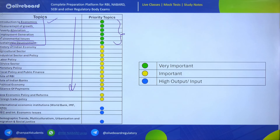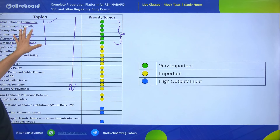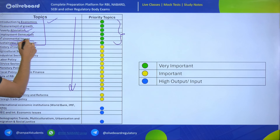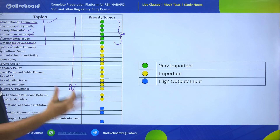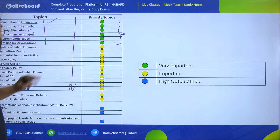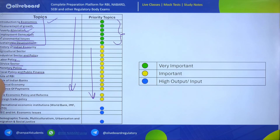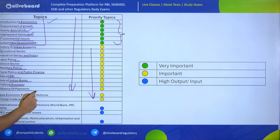The blue color topics include: international economic institutions, international economic issues, and social issues such as demographic trends, multiculturalism, urbanization, migration, and social justice. These topics have a high output-to-input ratio — you can prepare them in a short time and end up scoring really high marks. There is always a descriptive question based on economic institutions, economic issues, and demographic trends, urbanization, migration, and social justice topics.